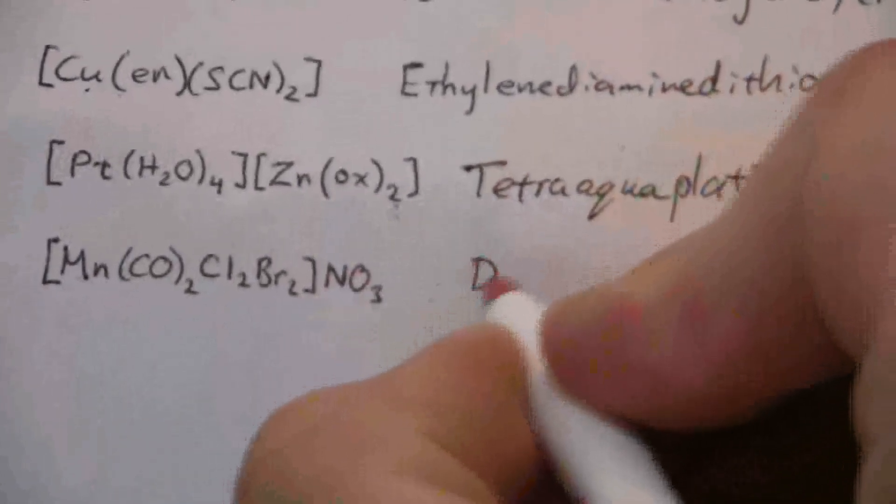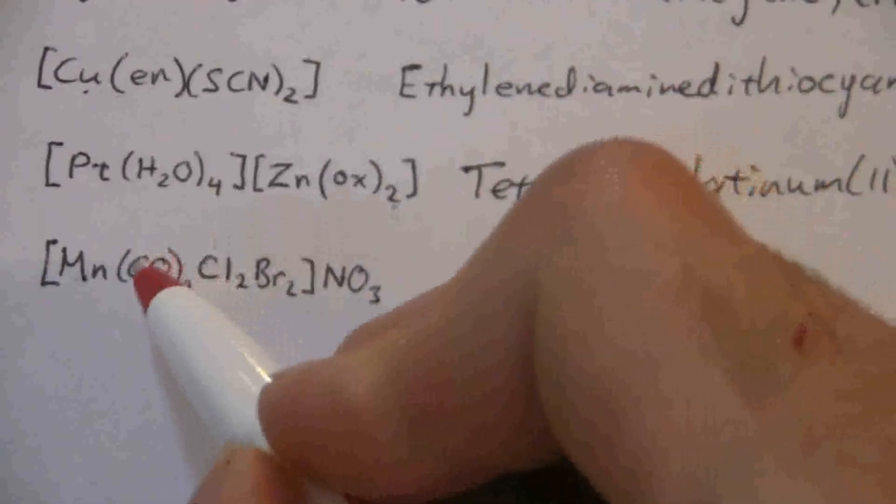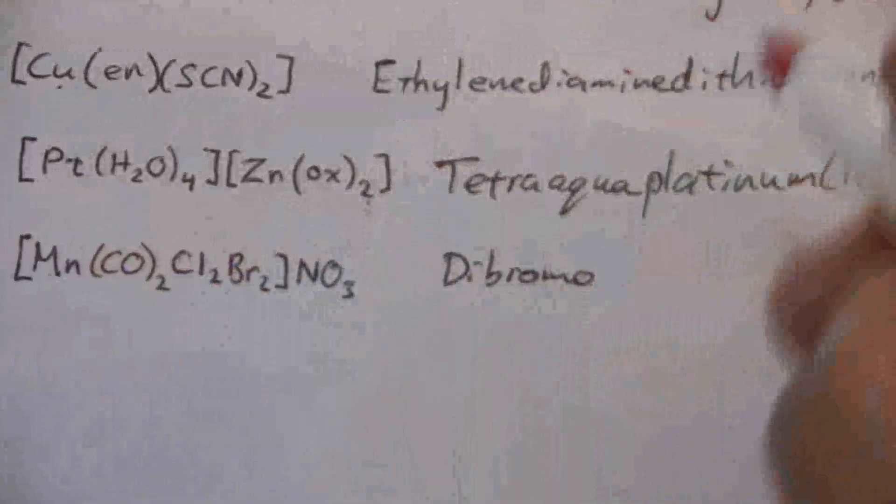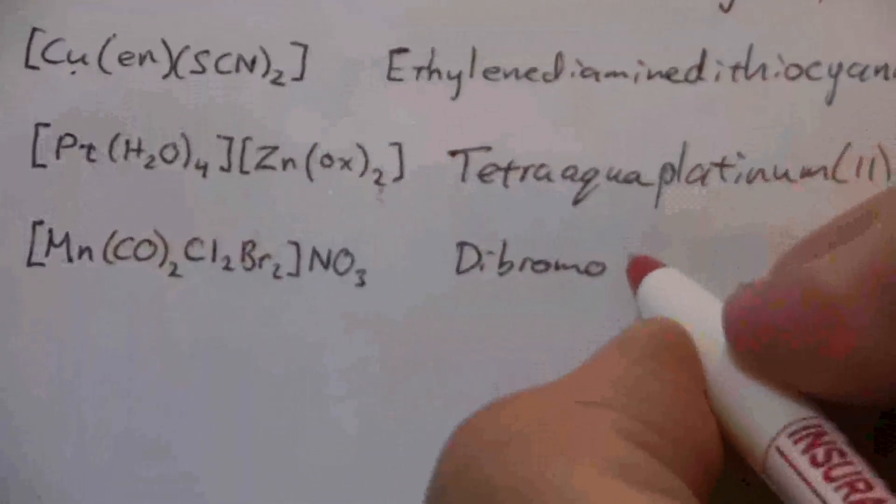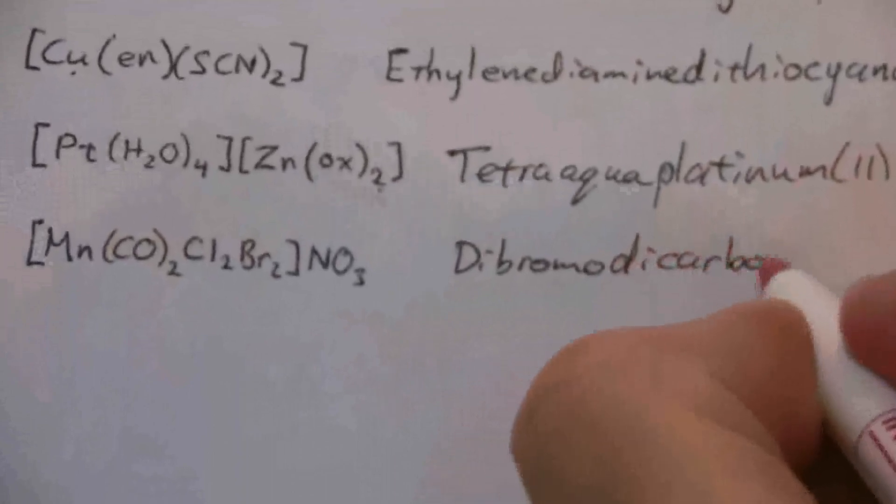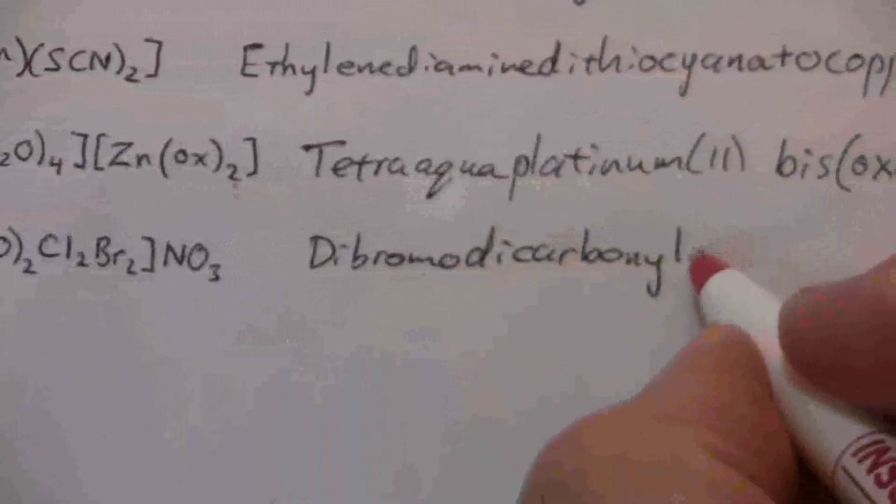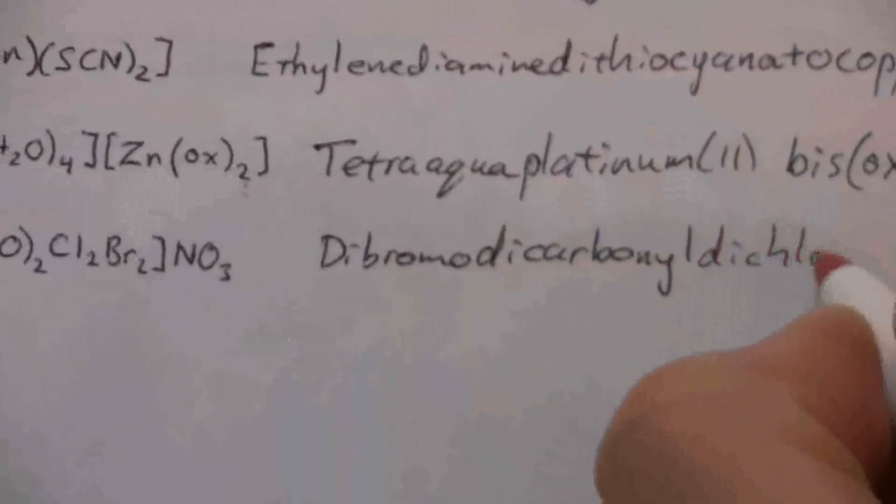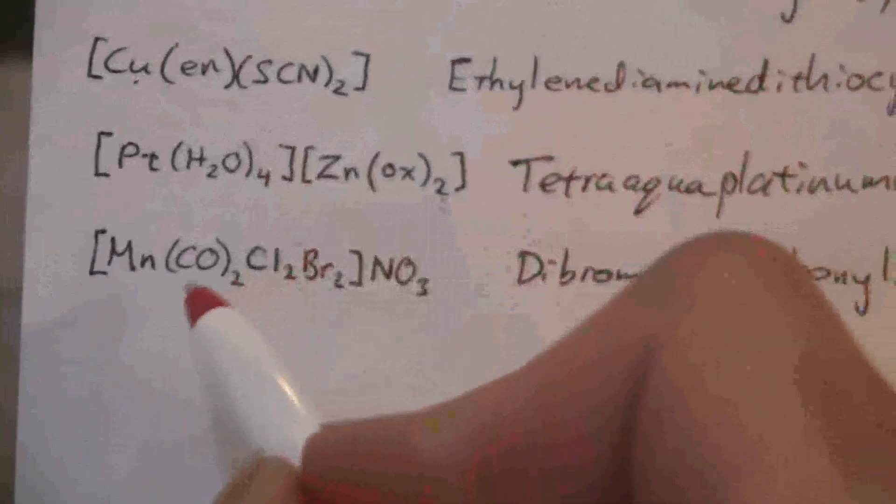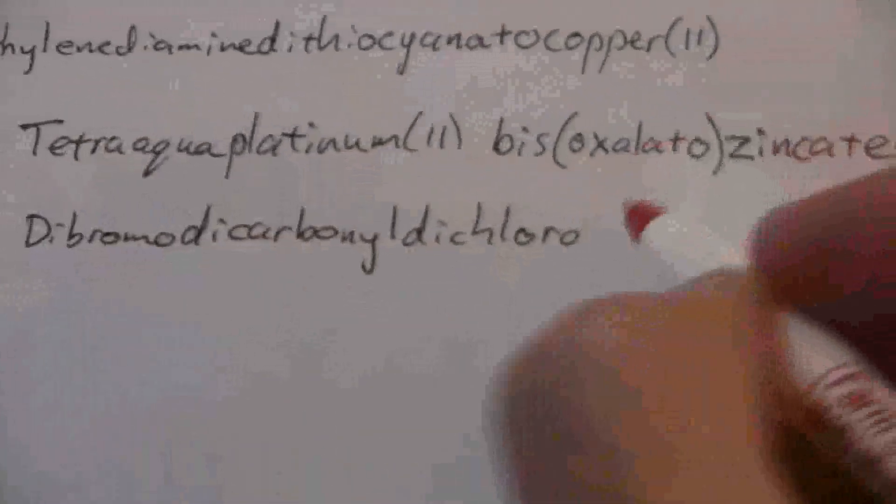So that'll be dibromo, and then dicarbonyl. The carbonyl is monodentate. So dibromo, dicarbonyl, dichloro, then we have the manganese five.